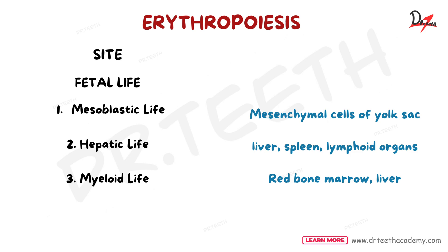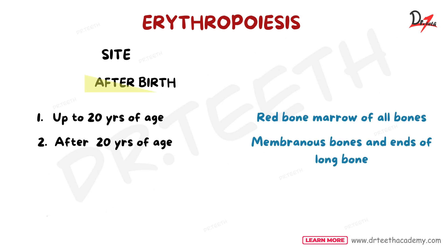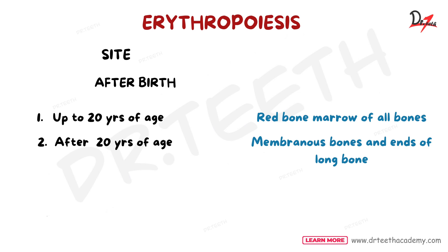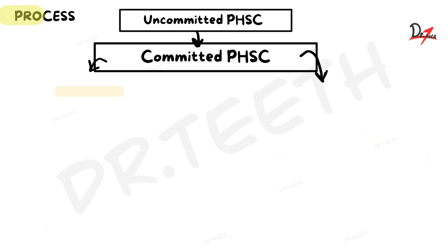After birth, erythropoiesis is divided into two categories: up to 20 years of age, and above 20 years of age. In those below 20, RBCs are produced from the red bone marrow of all bones. For those above 20, the body has achieved maturity and further growth has stopped, so RBCs are produced from all membranous bones and the ends of long bones.